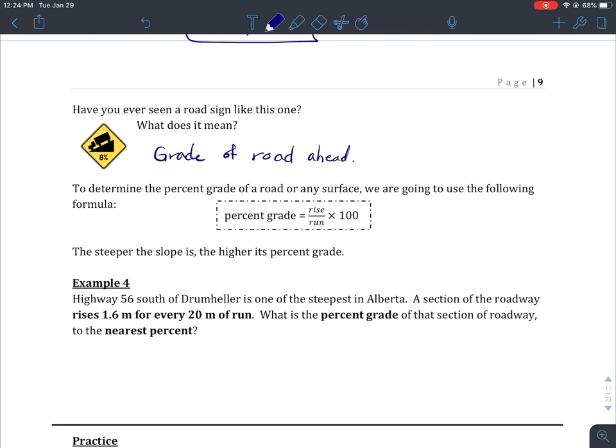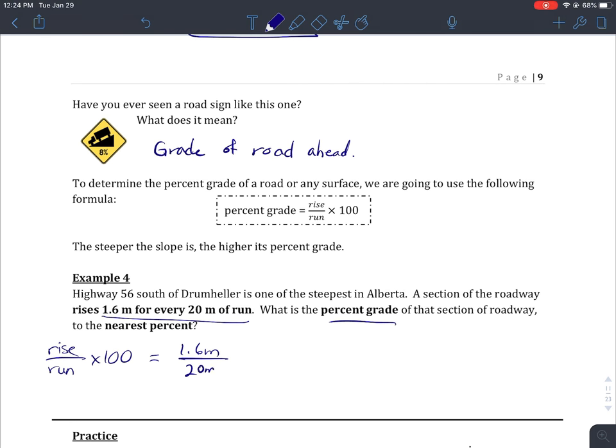Example 4: Highway 56 south of Drumheller is one of the steepest in Alberta. A section of the roadway rises 1.6 meters for every 20 meters of run. My formula is rise over run multiplied by 100. My rise is 1.6 meters, my run is 20 meters, and we'll multiply that by 100 to get our percentage. 1.6 divided by 20 multiplied by 100 gives us 8 percent. That's an 8 percent road, and it's one of the steepest in Alberta, so it gives you a sense of how steep these roads can be.